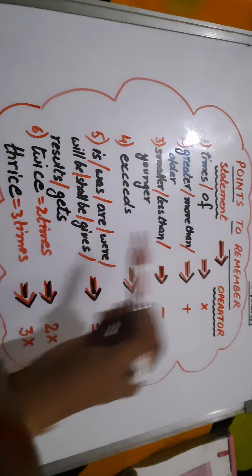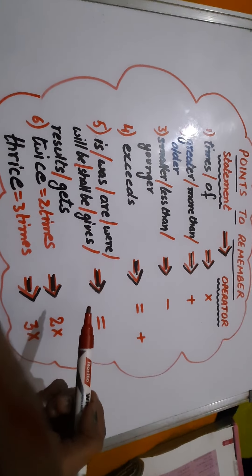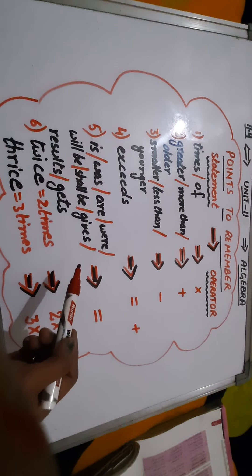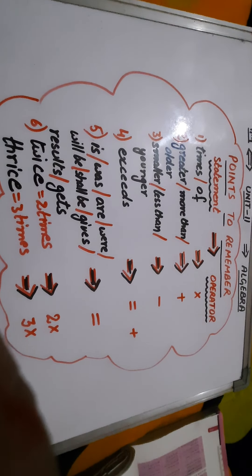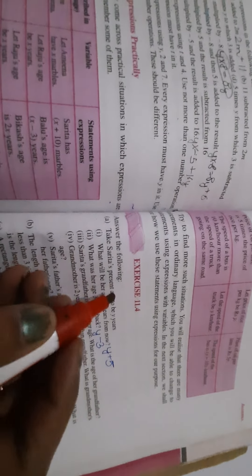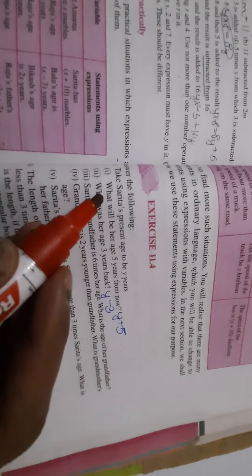These are the statement words which we deal with in statement questions, and these are the mathematical operators. Dear students, make this table in your notebook also before starting this exercise. Now let's start with question number one of Exercise 11.4. The first question says: Answer the following. Take Sarita's present age to be y years.